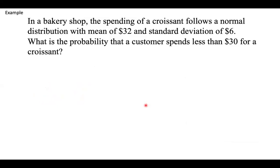Let's look at an example. So in a bakery shop, the spending of a croissant follows a normal distribution with a mean of $32 and a standard deviation of $6. What is the probability that a customer spends less than $30 for a croissant?